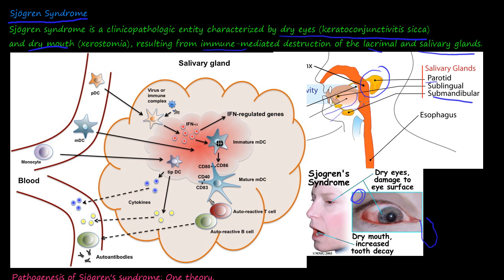The submandibular gland is underneath the mandible. It's an autoimmune disease that destroys the lacrimal and salivary glands, causing dry eyes and dry mouth. The dry mouth leads to increased tooth decay due to reduced saliva, and dry eyes damage the surface of the eye.